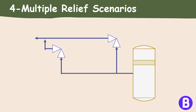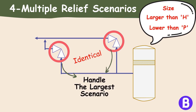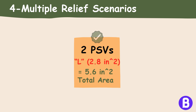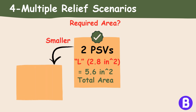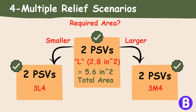Alternatively, another solution is to choose two identical PSVs of identical size — larger than H but smaller than P — so that the sum of both orifice areas handles the largest scenario. For example, two PSVs with orifice L (2.8 in² each) would yield a total area of 5.6 in². If the required area is less than 5.6 in², two PSVs of size 3L4 can be chosen; if a larger area is needed, two PSVs of size 3M4 can be selected.